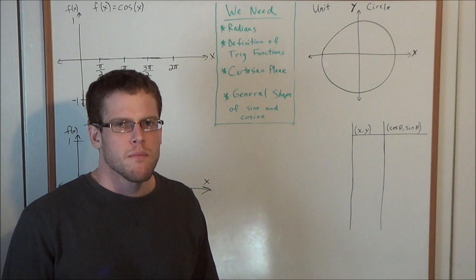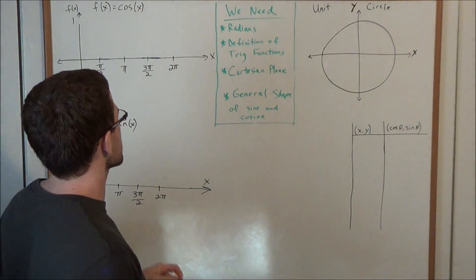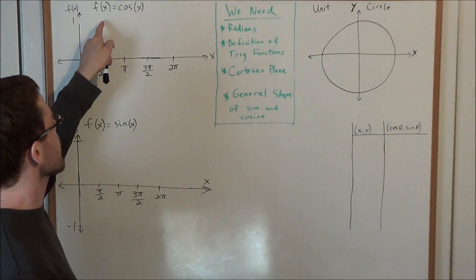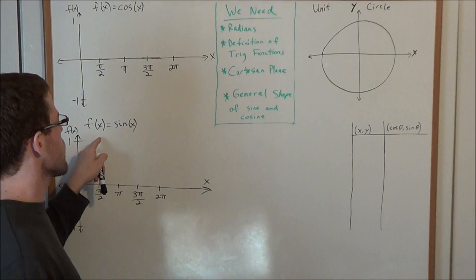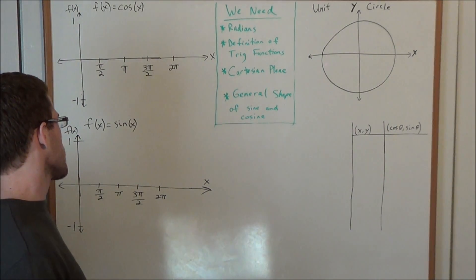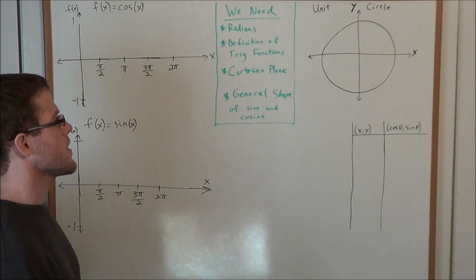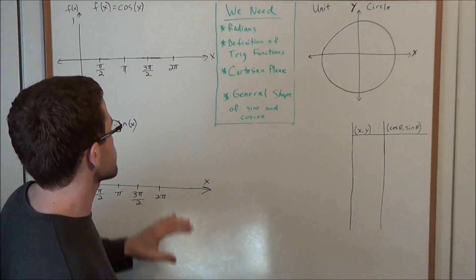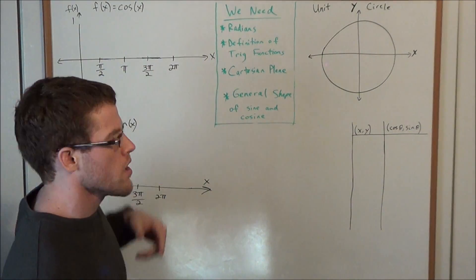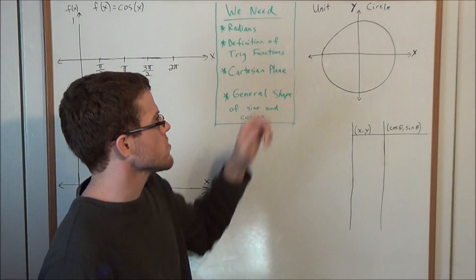Hello YouTube students, my name is Vincent, and today I want to take a look at sketching a graph of f of x equals cosine x and f of x equals sine x on the interval from x equals zero to two pi. To graph these two functions, the main tool we're going to need is the unit circle.